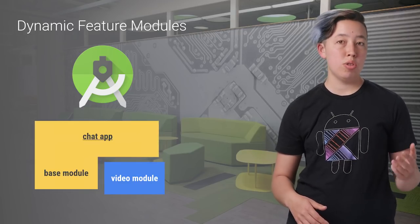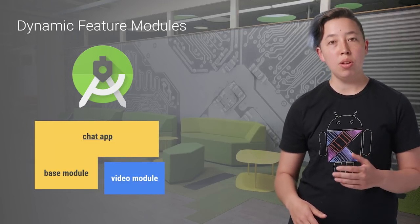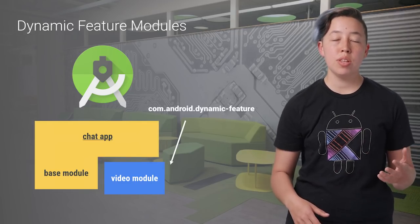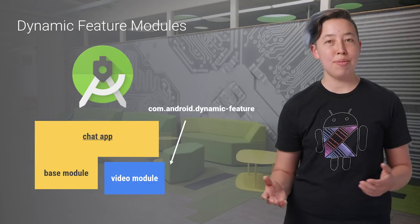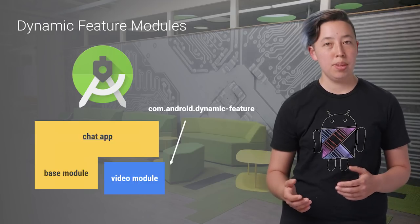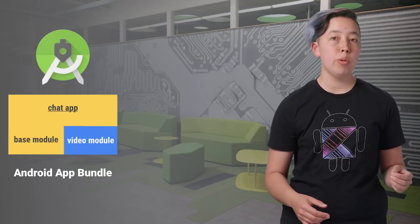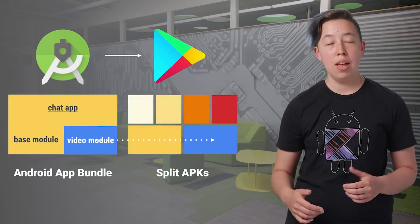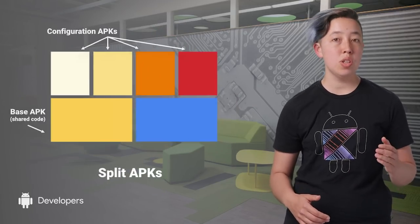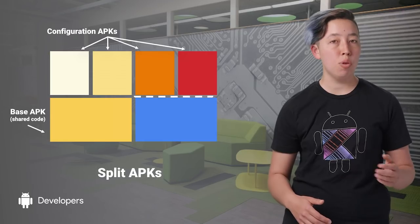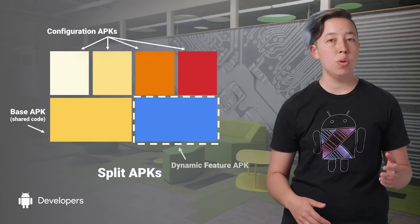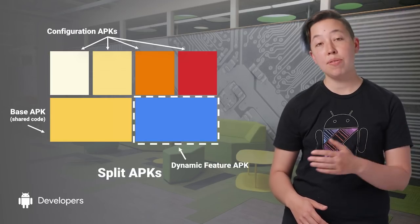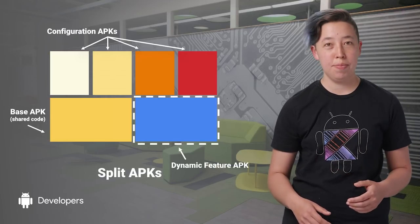Then, in Android Studio and Gradle, I would configure this as a Dynamic Feature module. Google Play will take your App Bundle with this module and create an additional split APK for the module, known as a Dynamic Feature APK.